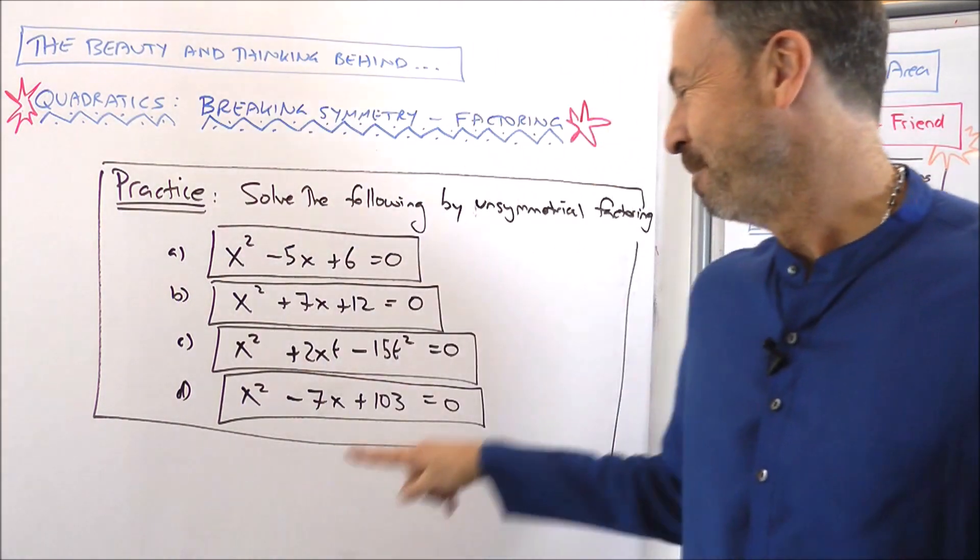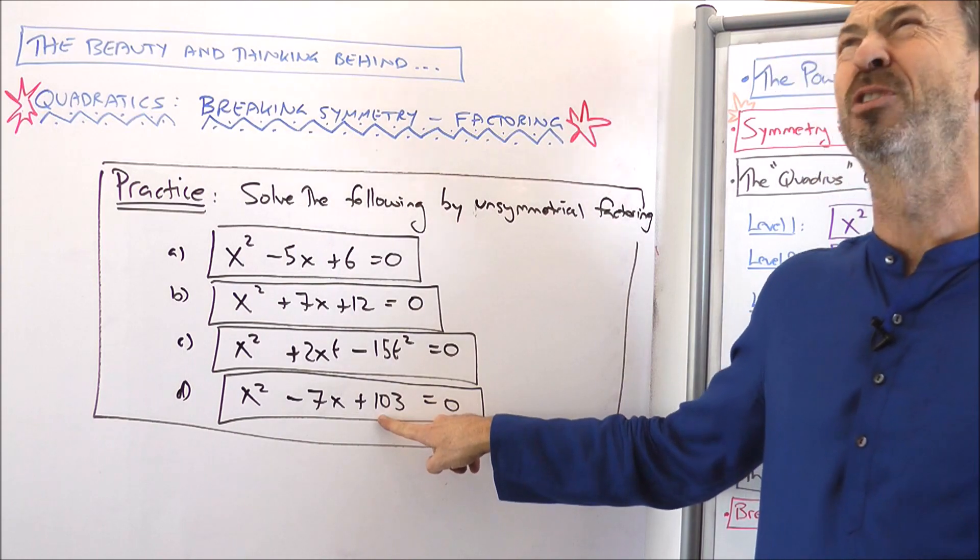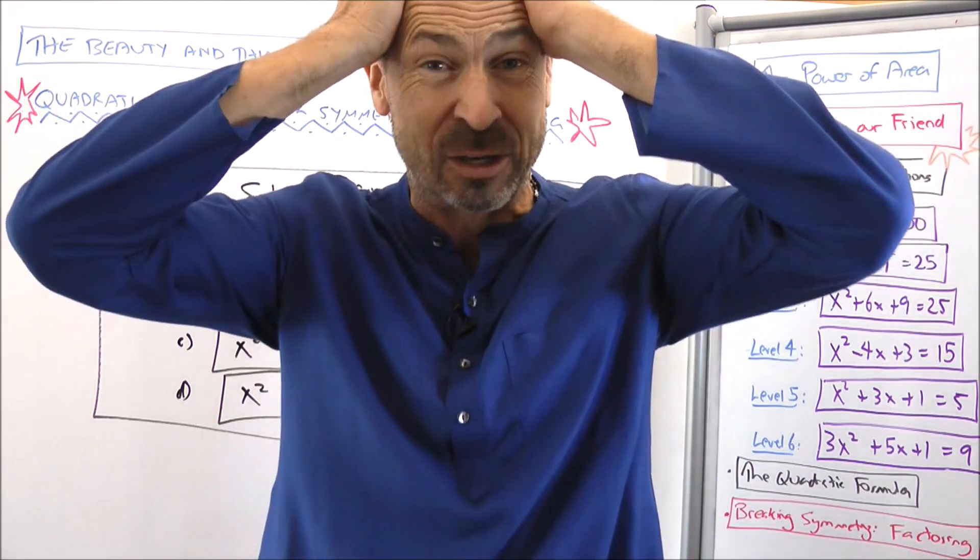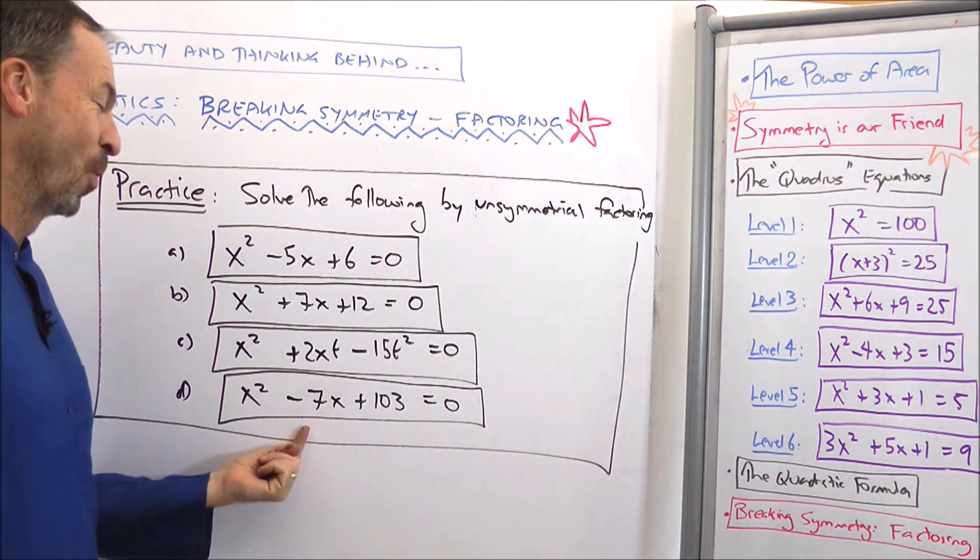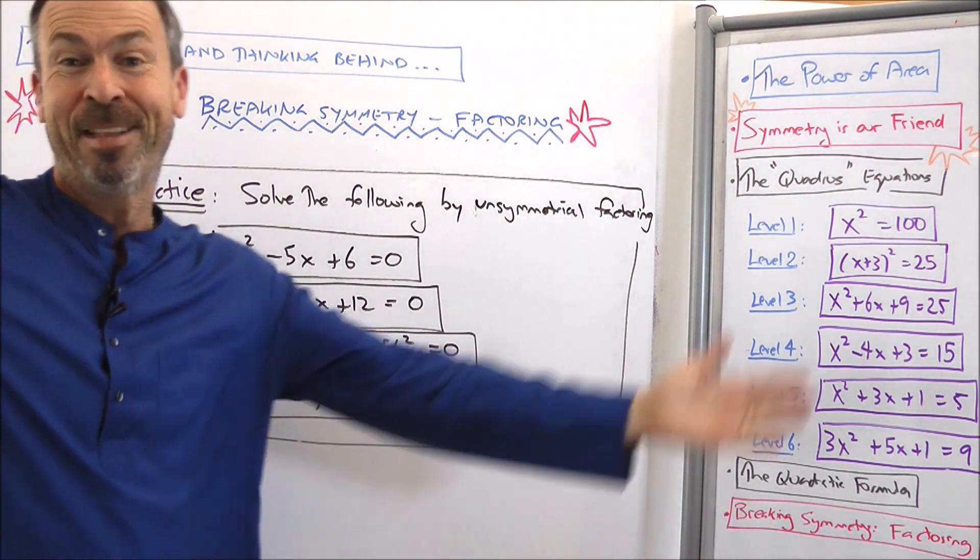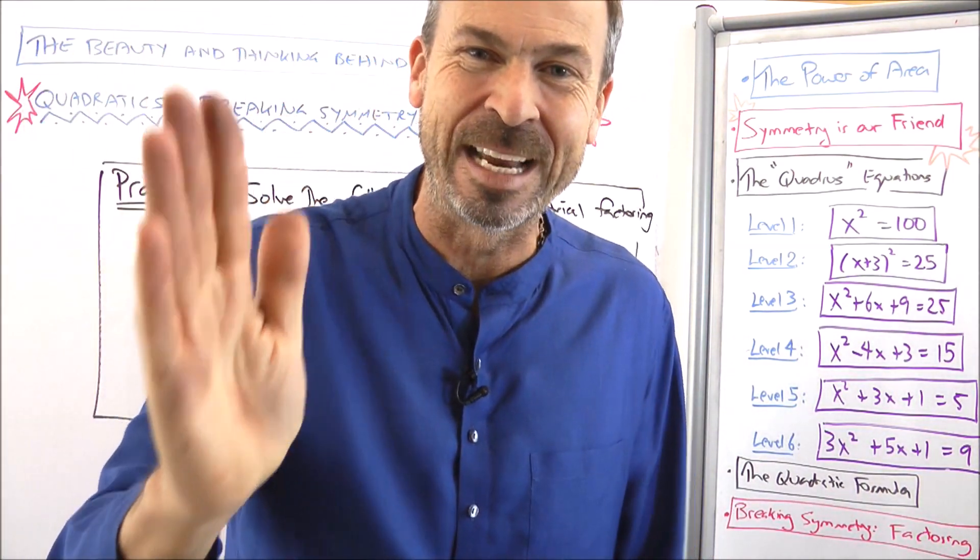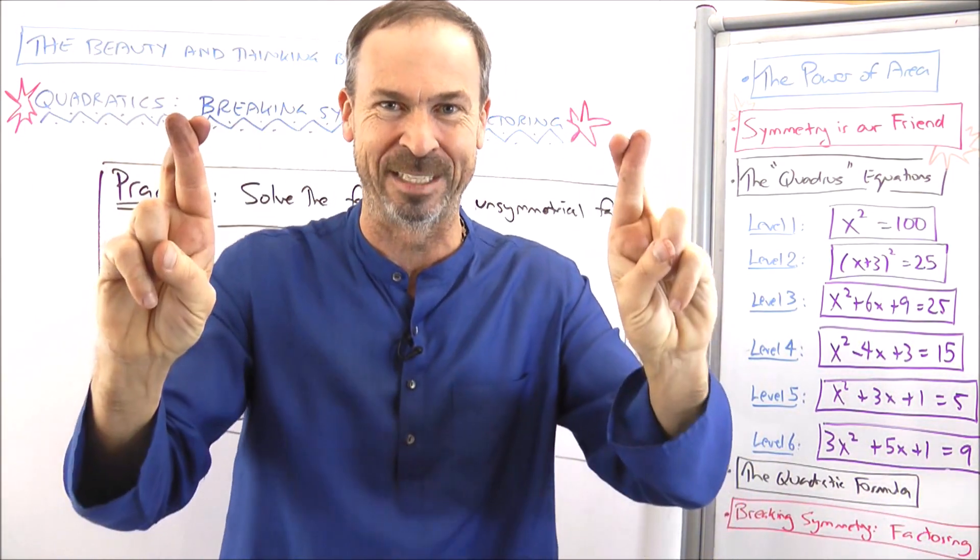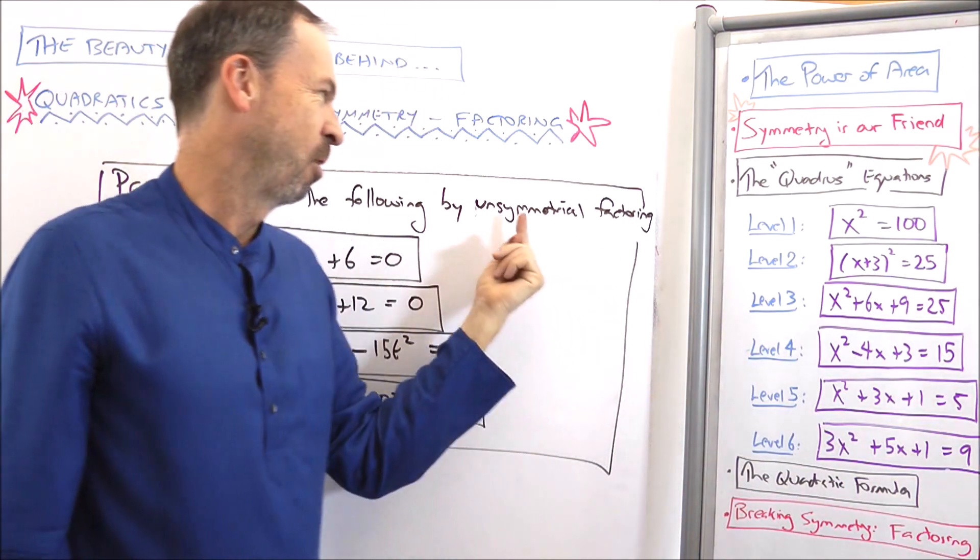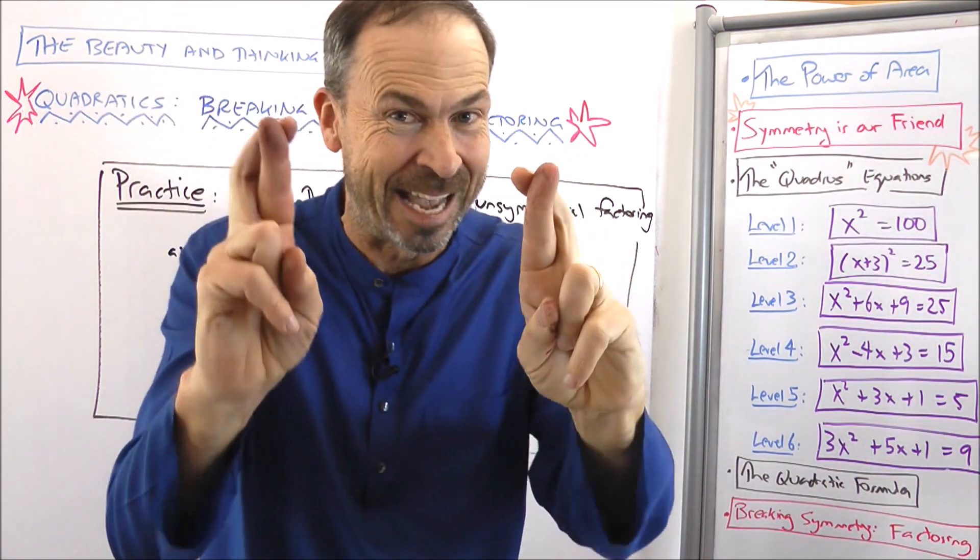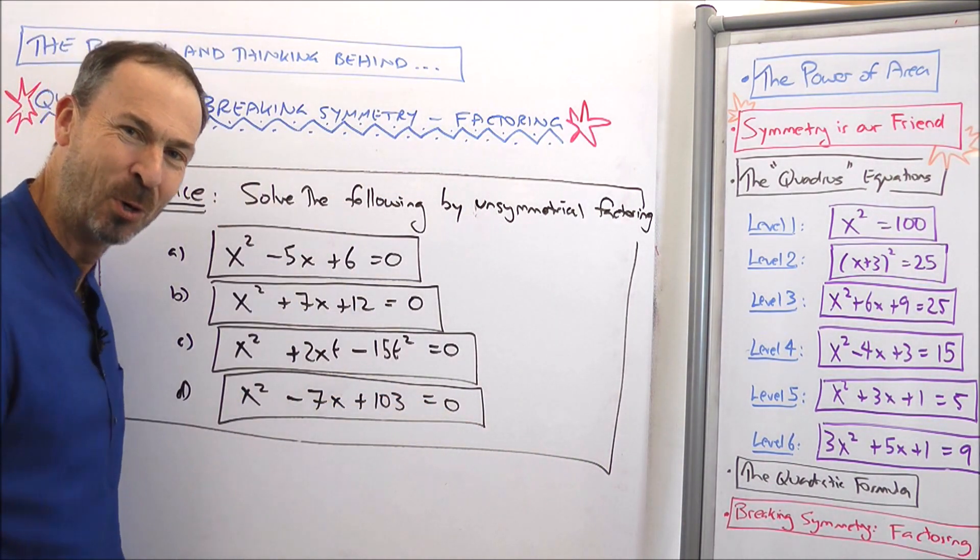Okay, did you do part d? Because you'll realize part d you cannot solve easily with factoring. You need to find factors of 103 that add up to negative 7 and your brain just hurts. This factoring technique only works in special circumstances and often won't work. If the numbers aren't friendly, good luck to you. It'll be very hard to do factoring if factoring even works at all. So I want to make that point. Factoring is about luck. You have to be lucky when you're doing the factoring technique because it's unsymmetrical. The story of quadratics is really about symmetry, so we're trying to do something that doesn't fit the story really. But we can luck out sometimes, but only sometimes. So part d hopefully was illuminating. Factoring does not always work.